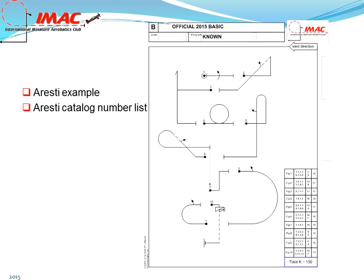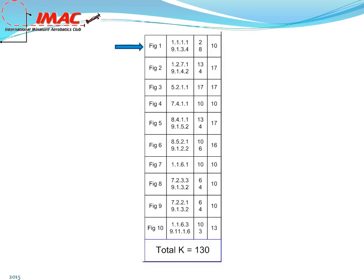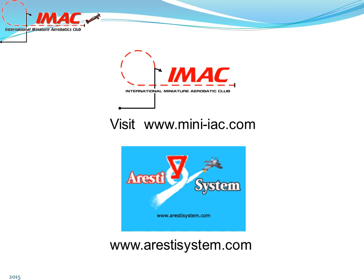This is an example of an Aresti sequence. Notice on the lower right-hand side, the Aresti catalog numbers are listed. Let's take a look at figure number one: it has a base figure of 1.1.1, found in the Aresti catalog, which holds a K-factor of 2. The roll element is 9.1.3.4, with a K-factor of 8. The entire figure has a total K-factor of 10. For more information, log on to miniiac.com or arrestisystem.com.